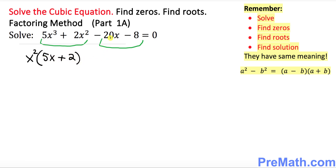Likewise, in the second pair over here, what is in common? As you can see, negative 4 is in common. And now what is going to be inside the parentheses? That's going to be 5x plus 2.